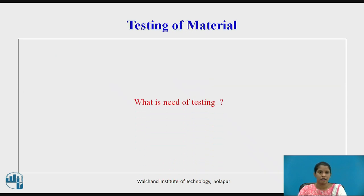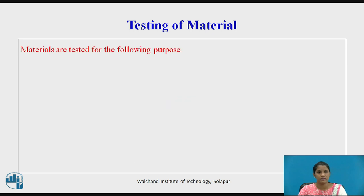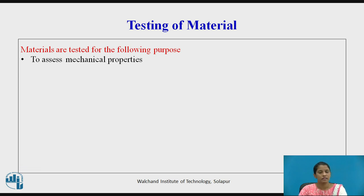Testing of Materials — what is the need for testing? Materials are tested for the following purposes: first, to test mechanical properties like tensile strength, brittleness, hardness, resilience, and so on.